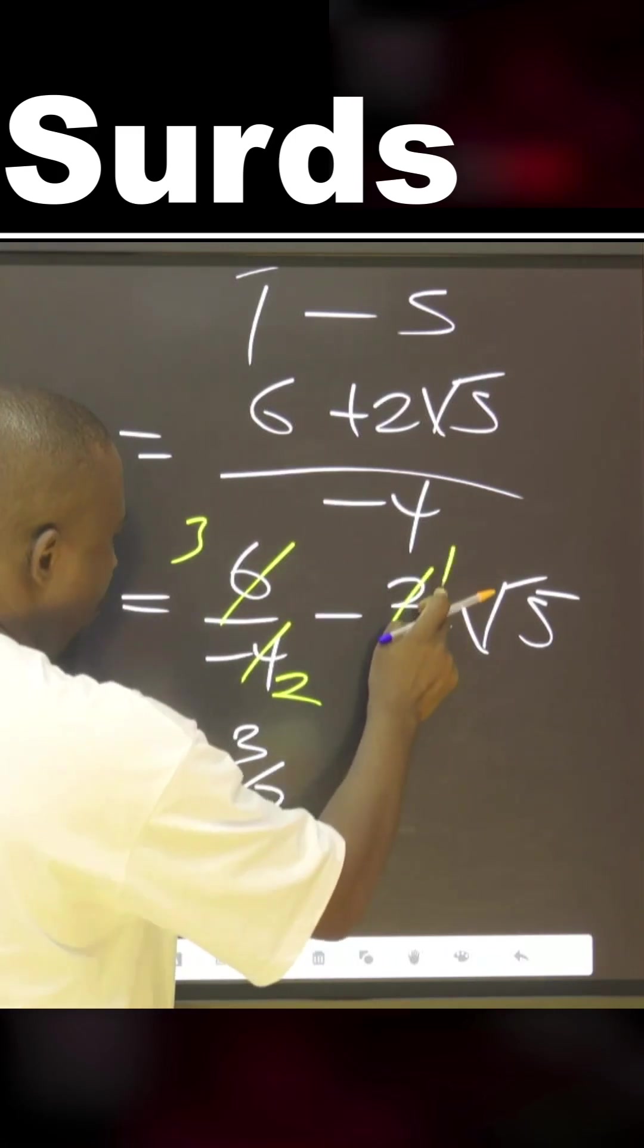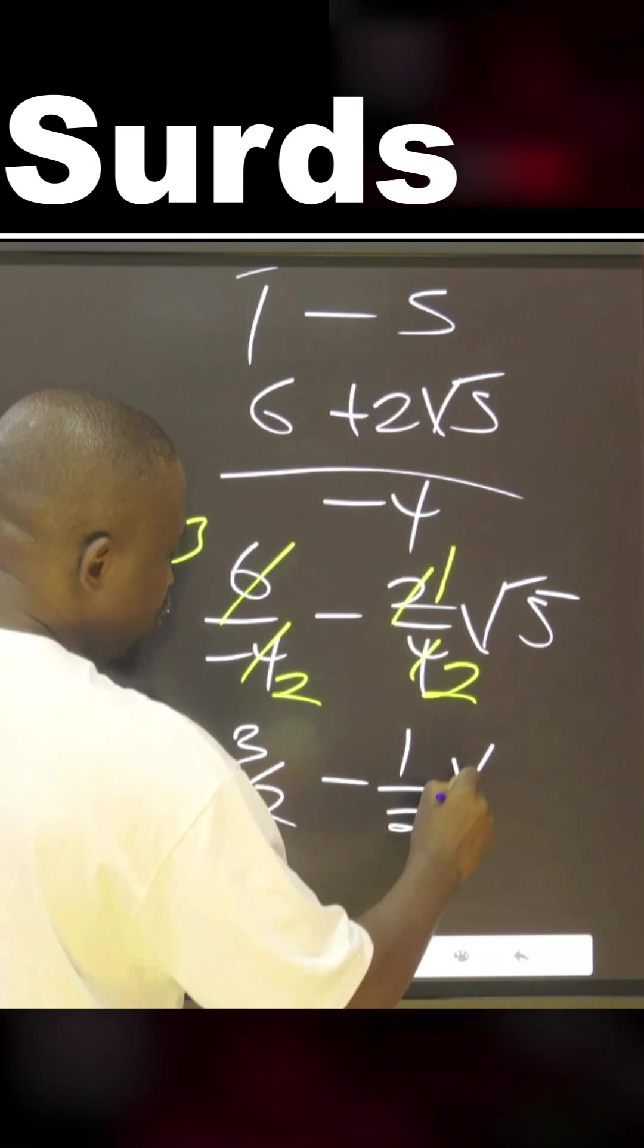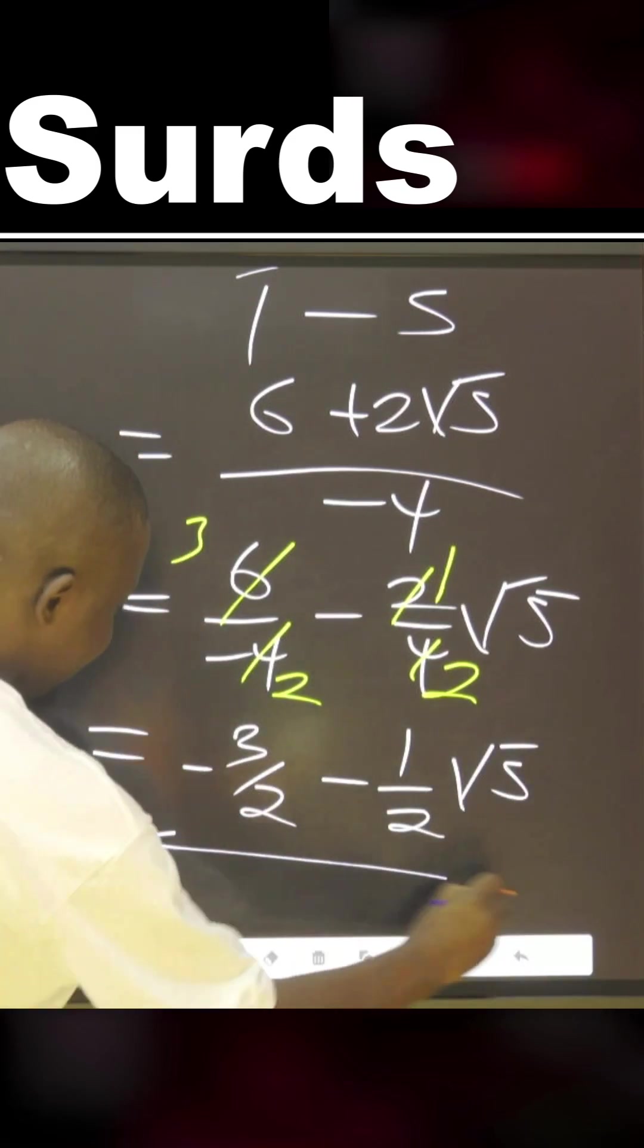Two here one, two here two, minus one over two square root of five. You can leave it as the final answer.